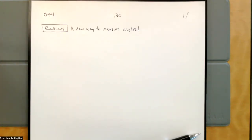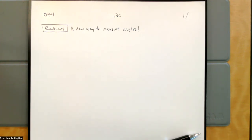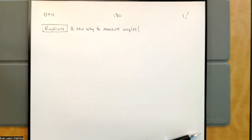Radians is just a new way to measure angles — a different way of measuring angles. In the beginning, it's not going to be obvious why we would even want to do this. It's not going to be obvious that when we have degrees that work so well, using an awesome number like 360 for a full circle, why would we want to do something so insane as introducing something other than 360? But here we are: radians.